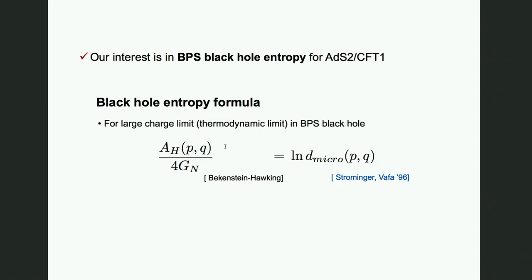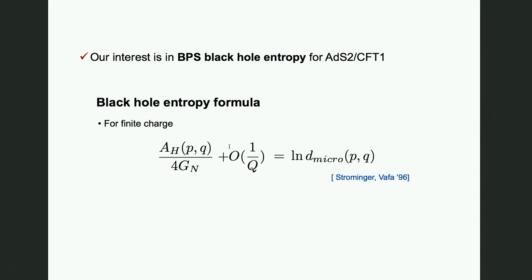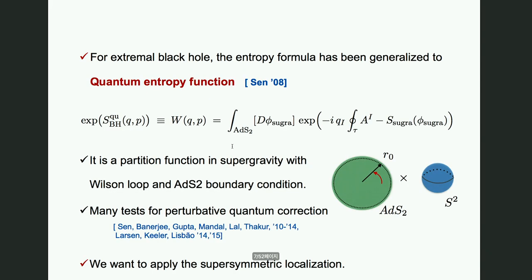There is one caveat in this equality: it holds only in the large charge limit. For the finite charge case, the entropy formula receives quantum corrections, and this demands us to generalize the entropy function. For the extremal black hole case, such generalization — the entropy formula — has been generalized by Ashoke Sen as the so-called quantum entropy function.